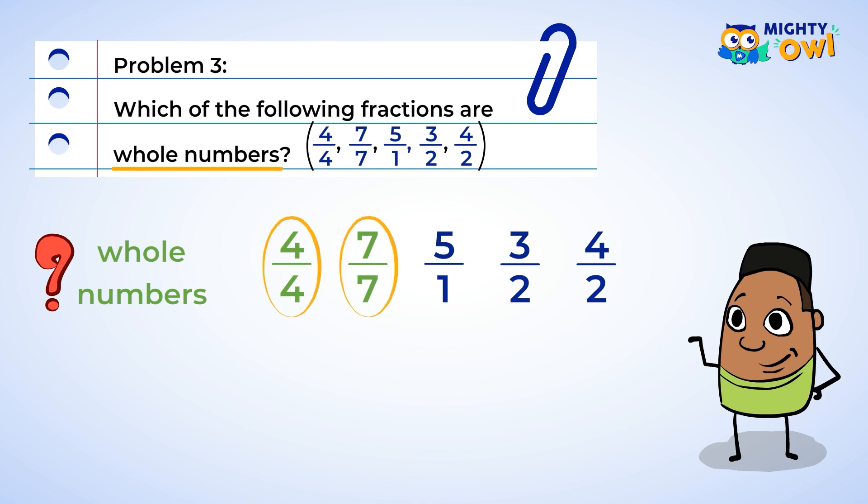We also learned that when a number is written over one, it is a whole number. We can circle five over one.